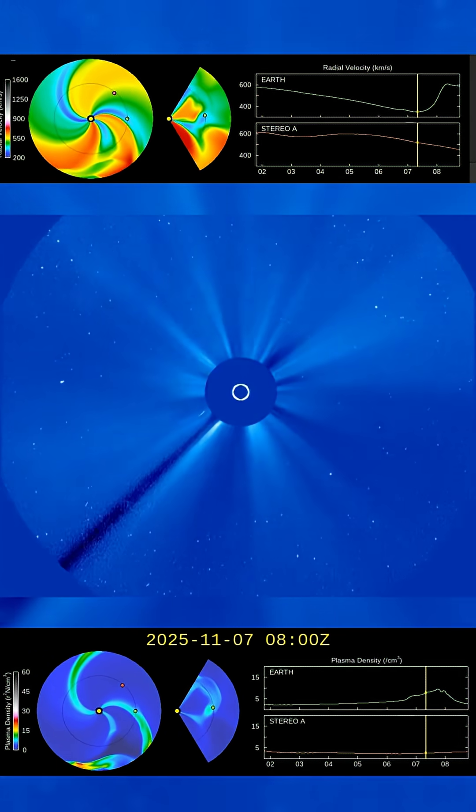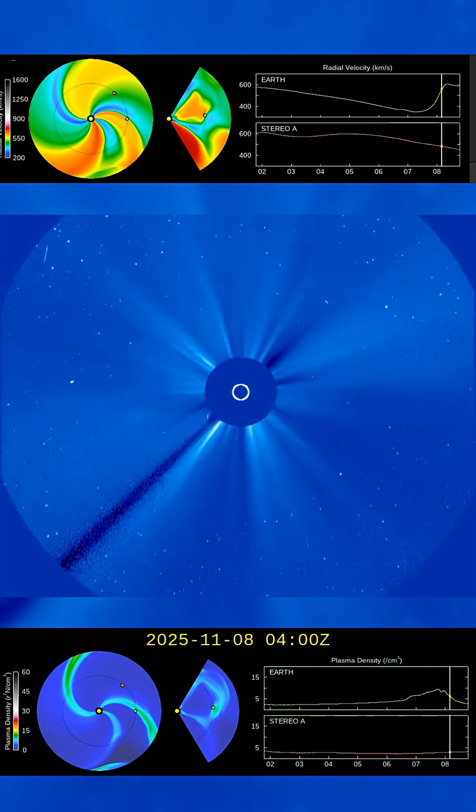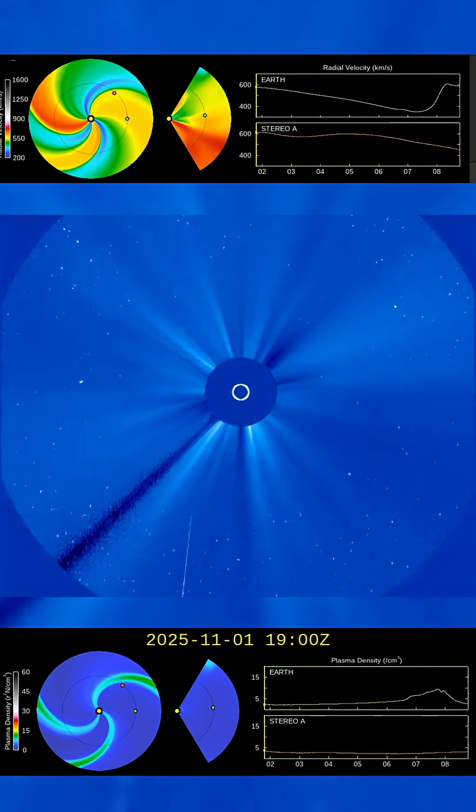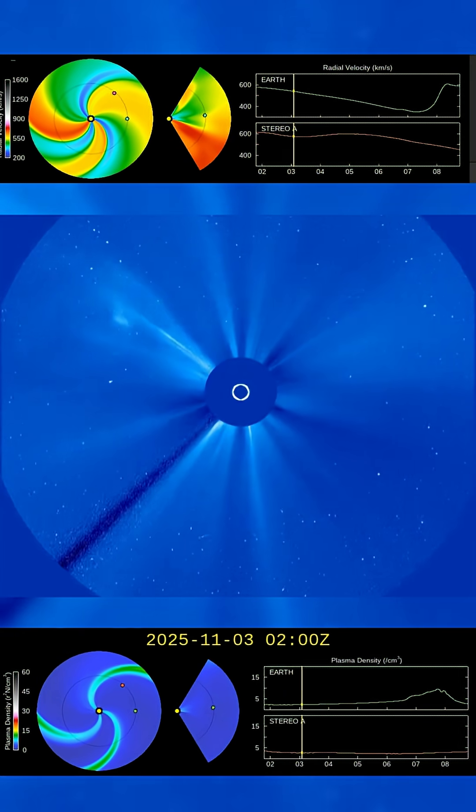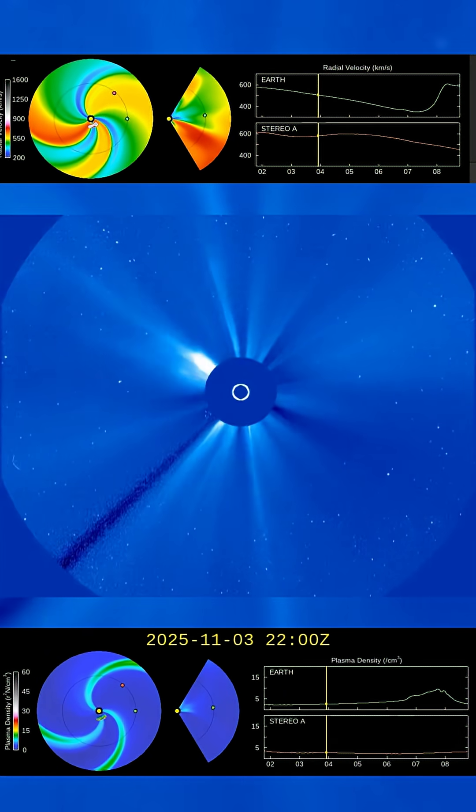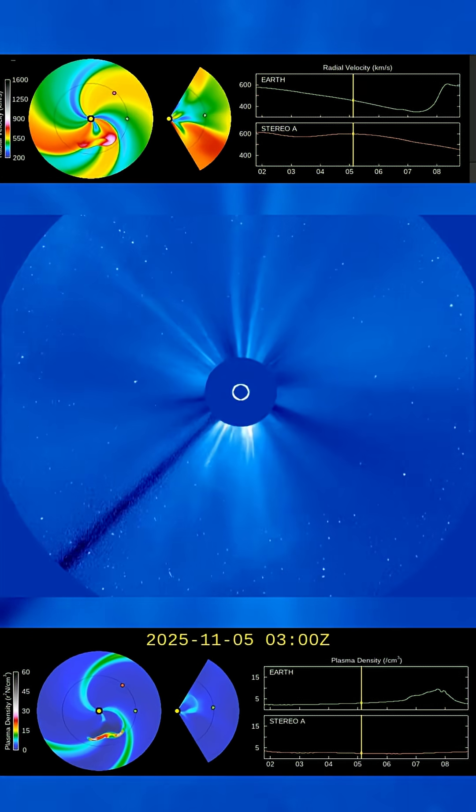Solar activity is expected to remain high over the next few days, with a 60% chance of more M-class flares and a 10% chance of another X-class event. Observers at higher latitudes should watch for possible auroras late this week as geomagnetic conditions intensify.